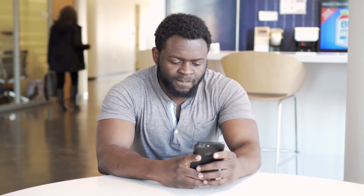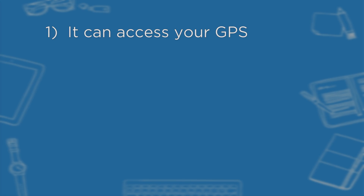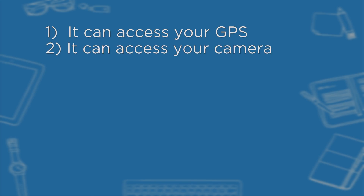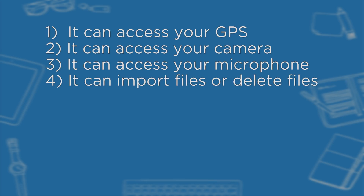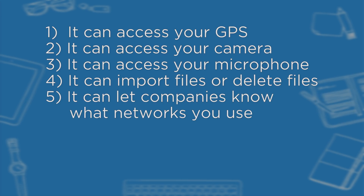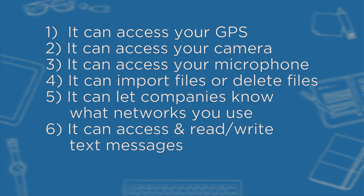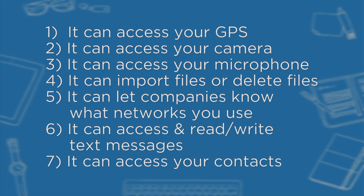Before you download that next app, make sure to look in the privacy settings and terms and conditions. Sometimes these options are buried and difficult to find, so you should know where to look. An app can access your GPS, camera, microphone — sometimes recording randomly — record phone conversations, import or delete files, access your text messages, and access your contacts and sometimes make phone calls.